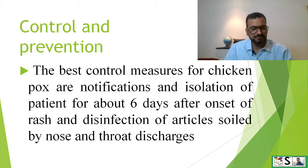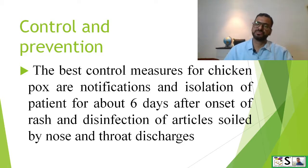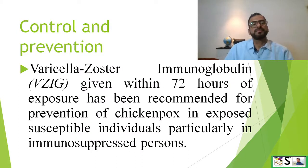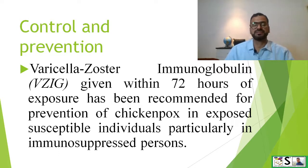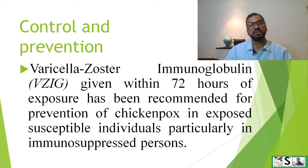How can we control and prevent chickenpox? The best control measure is notification and isolation of the patient for about 6 days after the onset of rashes, and disinfection of articles soiled by nose and throat discharges of the patient. Varicella zoster immunoglobulin is also available and can be given to the patient within 72 hours of exposure. This can prevent chickenpox and can also be given to immunosuppressed clients.